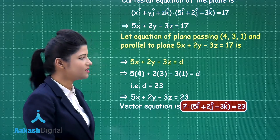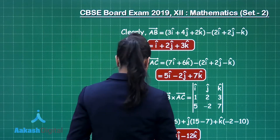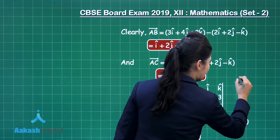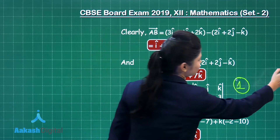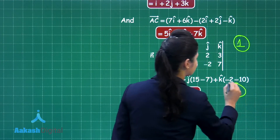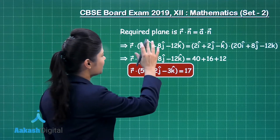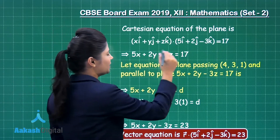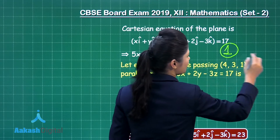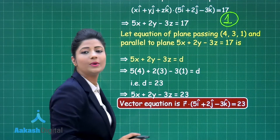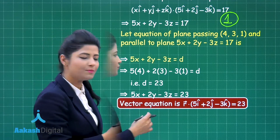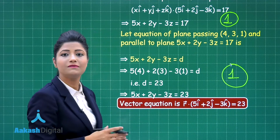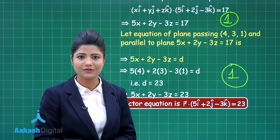As this was a 6-marker question: obtaining AB vector and AC vector gives 1 mark; obtaining N vector gives another 1 mark; finding the required equation of the plane gives 2 marks; obtaining the Cartesian equation gives 1 mark; and obtaining the equation of the parallel plane gives 1 mark — giving a total of 6 marks for this question.